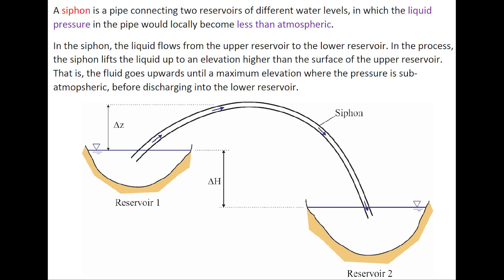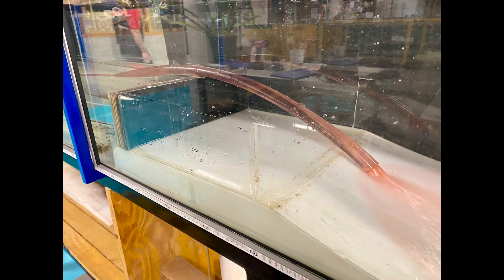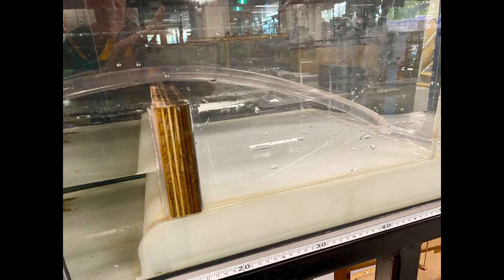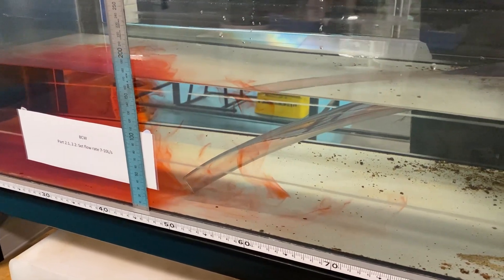In the process, the liquid is lifted up to an elevation higher than the surface of the upper reservoir before it goes downward and reaches the downstream reservoir. The photographs in the movie illustrate a simple siphon used to drain a laboratory flume. The red-colored dye on the transparent wall of the siphon conduit enables us to visualize the flow motion as the water is lifted upwards to pass above the black-colored wall and then is discharged further downstream.